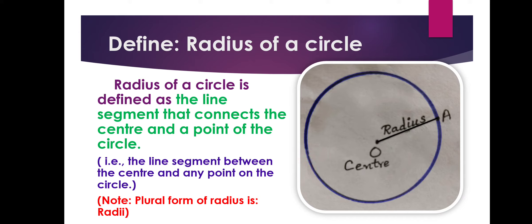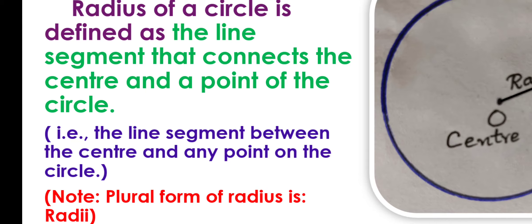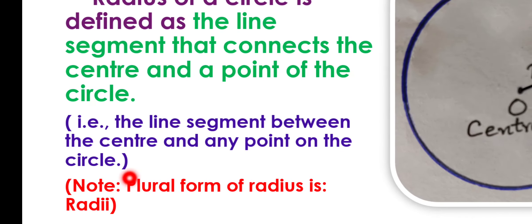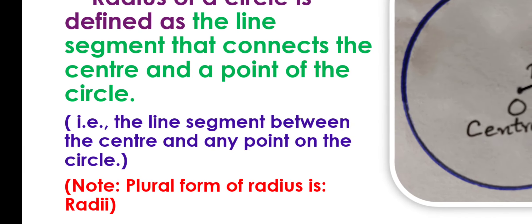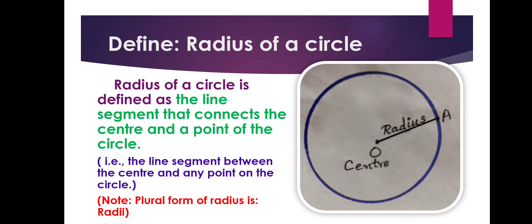If you have more than one radius, we call it radii. So, what is the plural form of radius? It is radii — R-A-D-I-I.